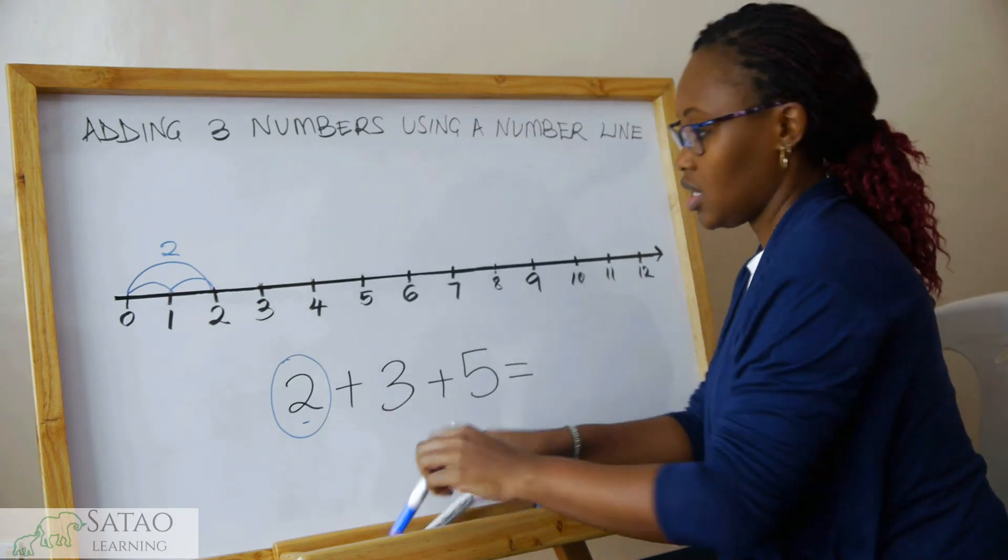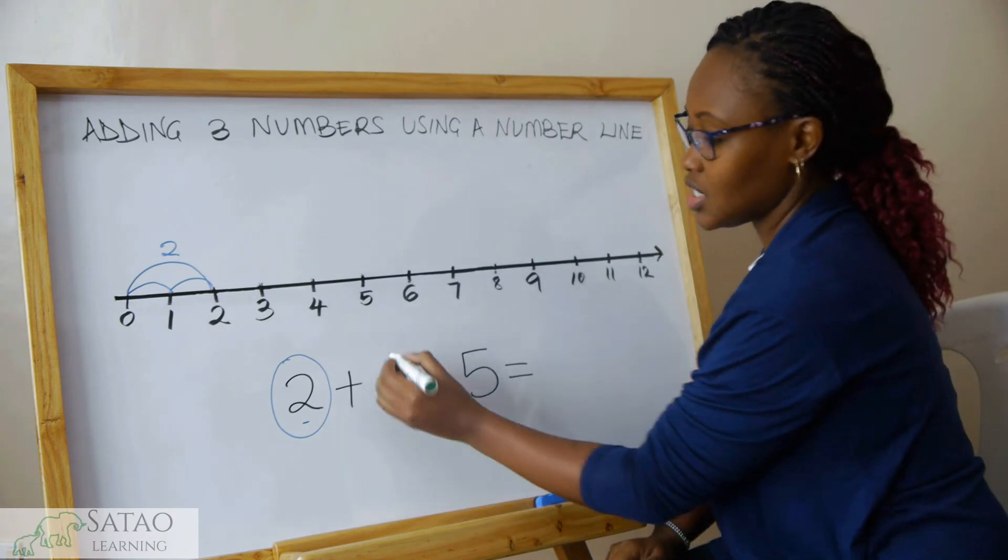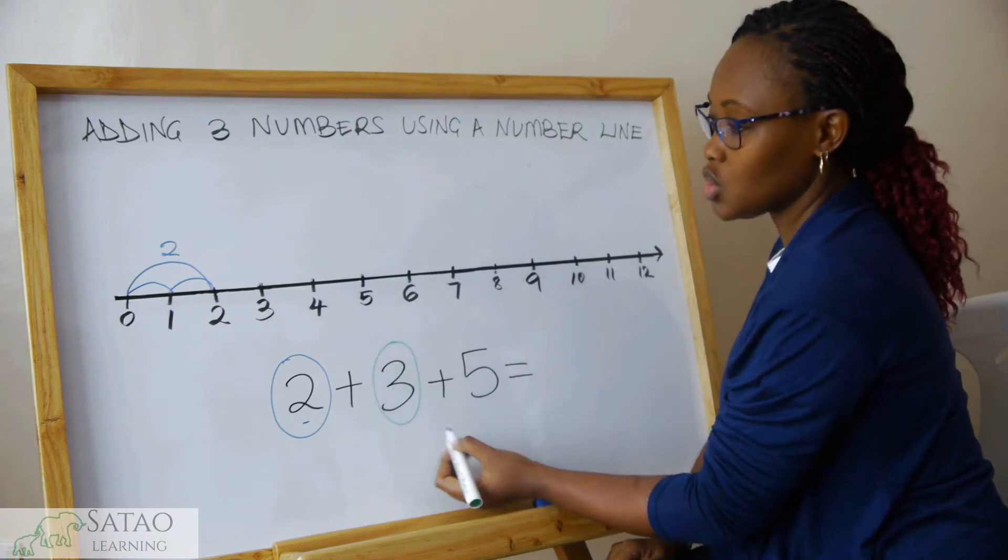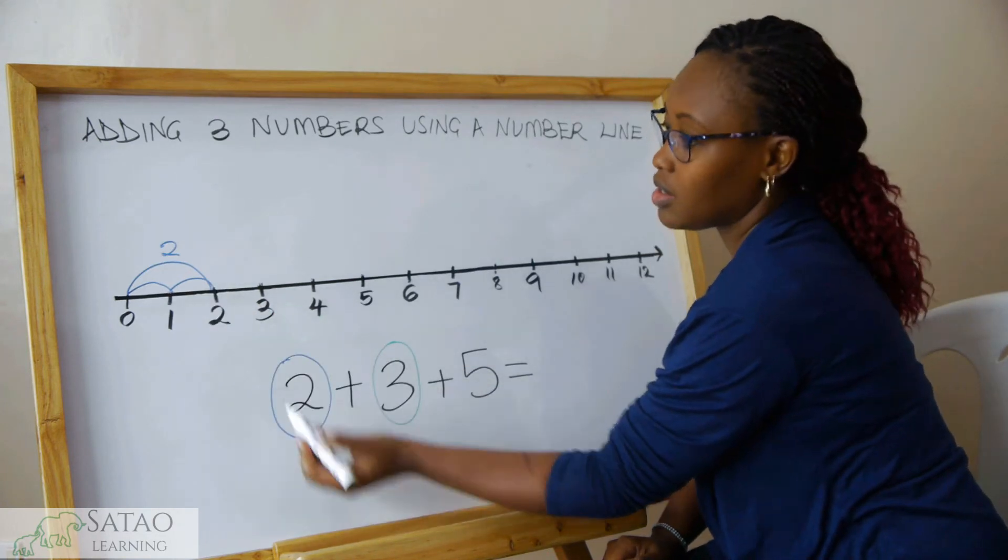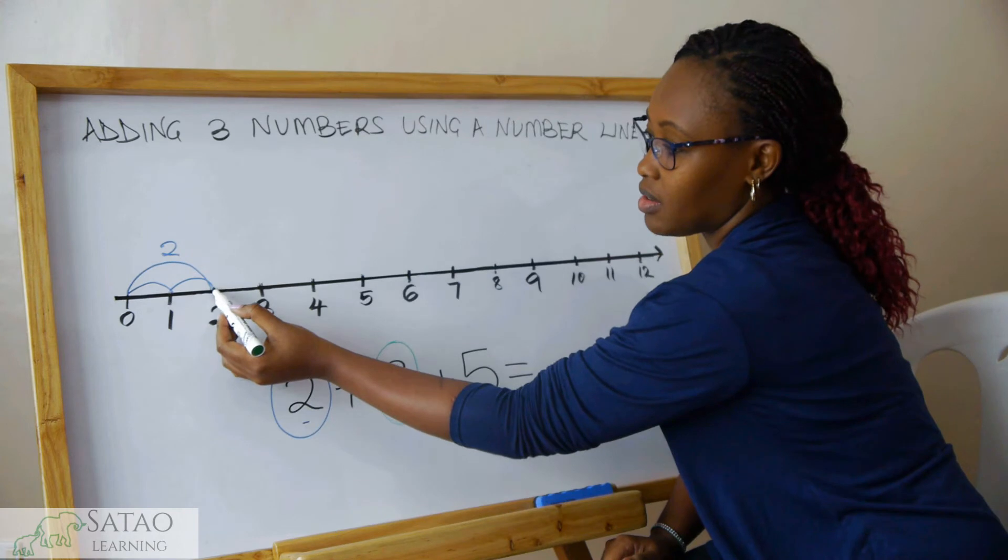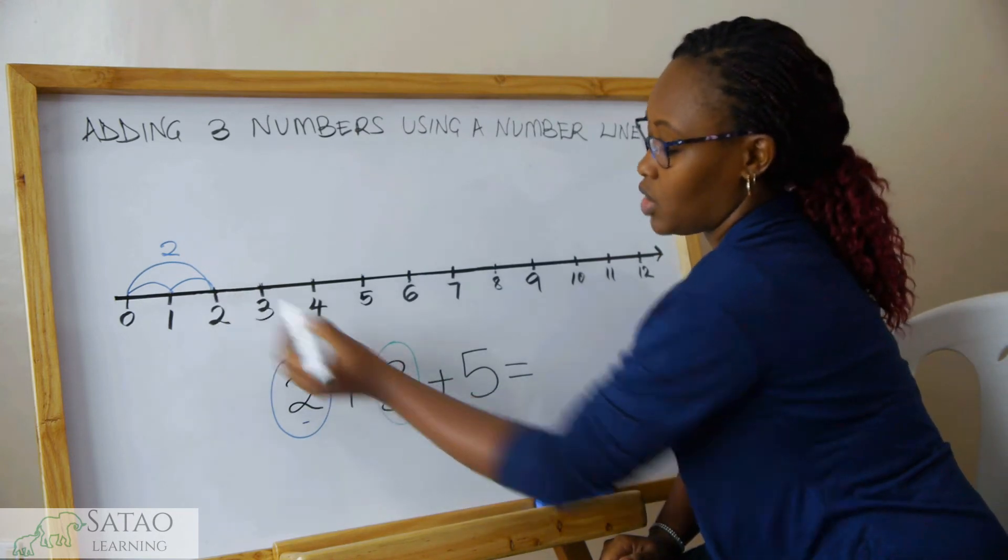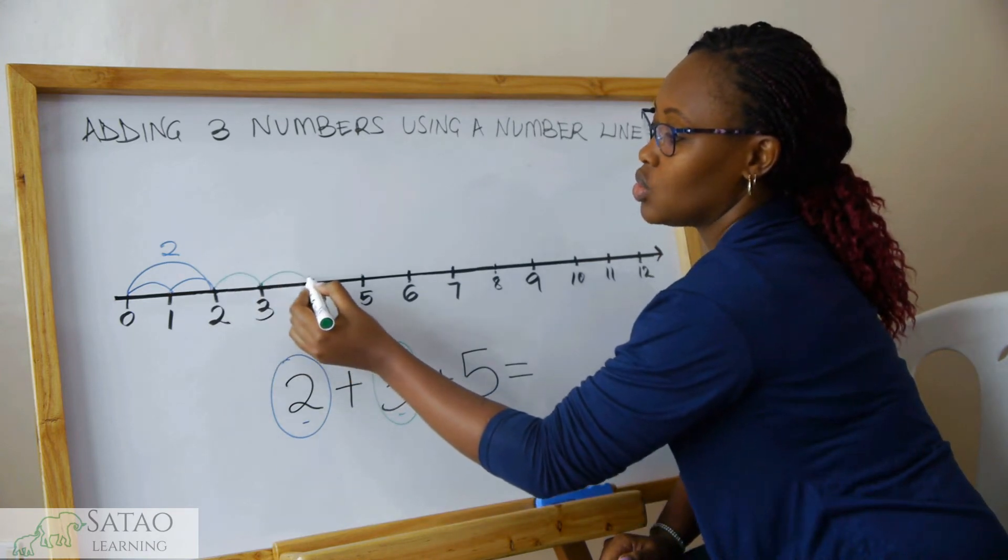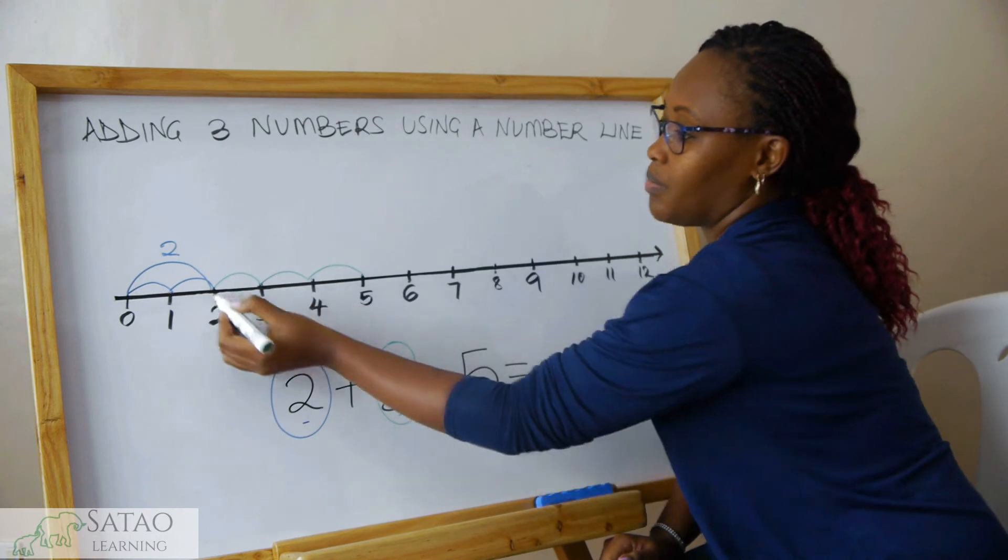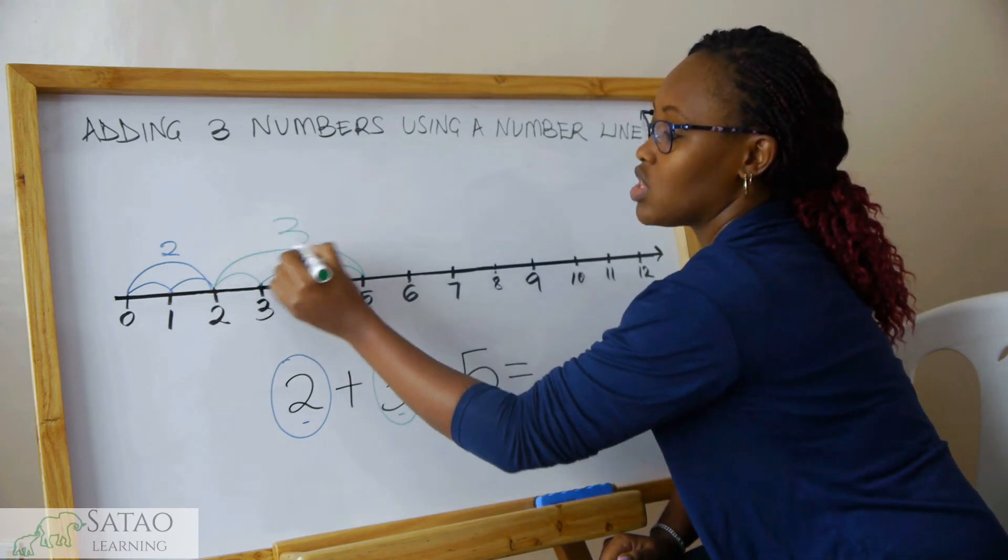Then we move on to the second number, which in this case is 3. Where we finished off with the first number, we start off there. Then we skip three because this is the number here. We skip one, two, three. Those are three steps, and we put number 3 there.